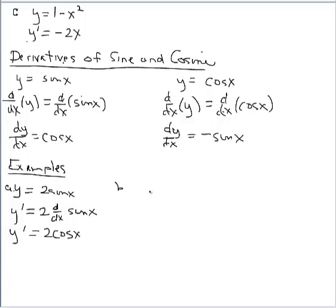For example B, what about y equals 2 plus sine x? That derivative, term by term using the sum and difference rule: the derivative of the constant 2 is zero, and the derivative of sine is cosine. So y prime equals cosine x.